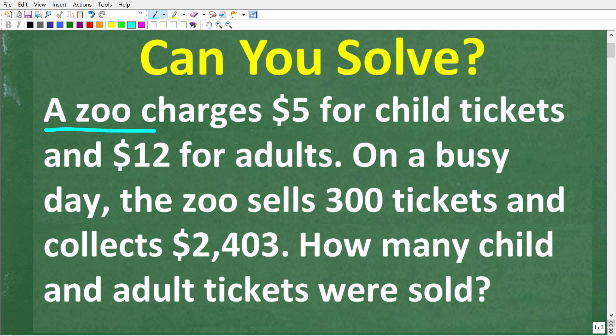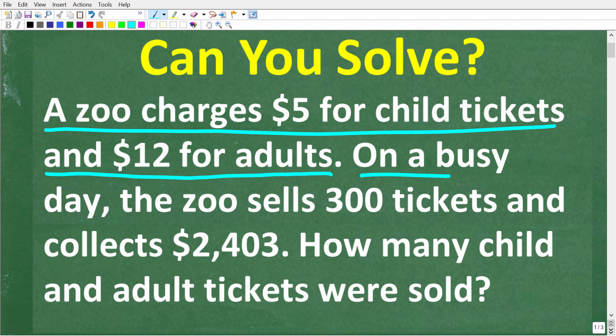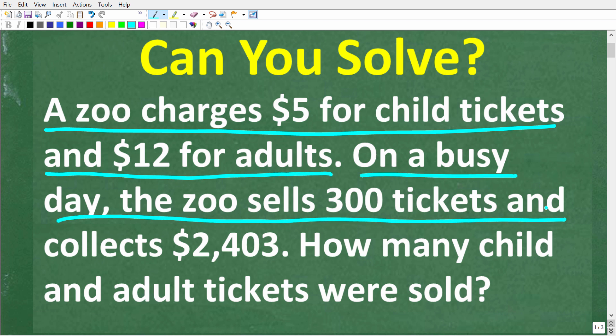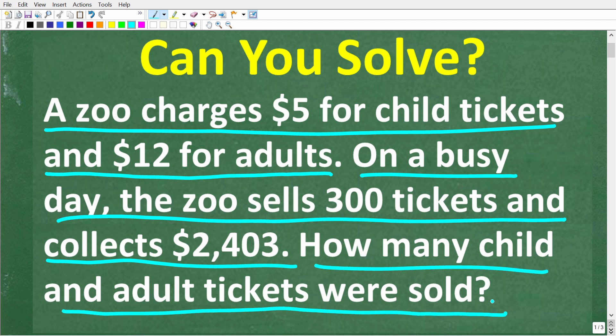A zoo charges five dollars for child tickets and twelve dollars for adult tickets. On a busy day the zoo sells 300 tickets and collects two thousand four hundred and three dollars. The question is: how many child and adult tickets were sold? Feel free to use a calculator, but if you think you know the answer, put that in the comment section.